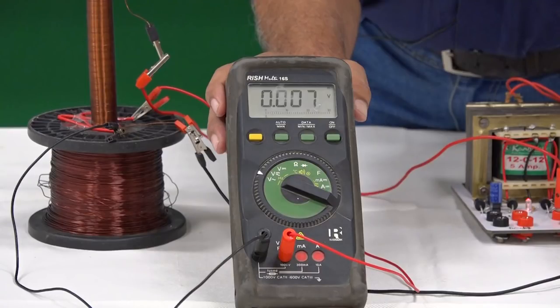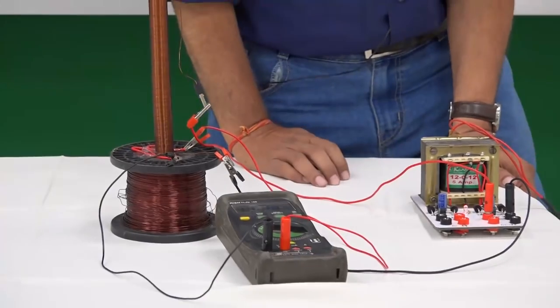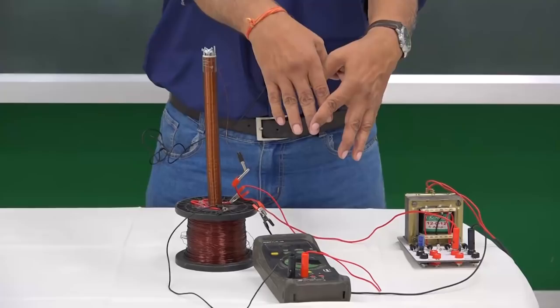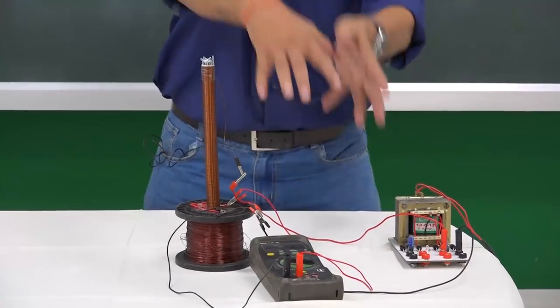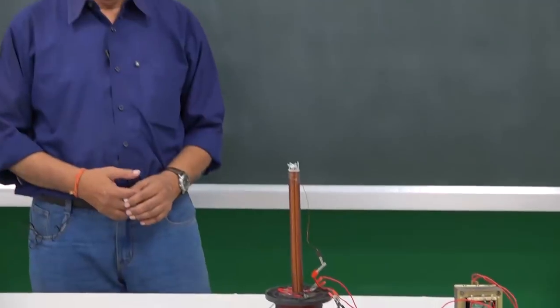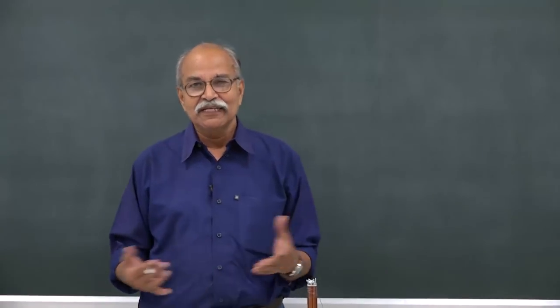That is the experiment. The EMF which is produced in this circuit is different. Once I put this multimeter on this side it is different. And the explanation is pretty simple.